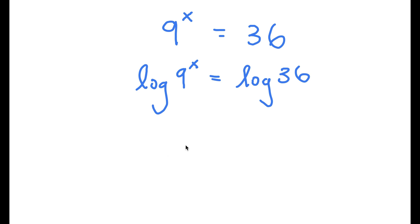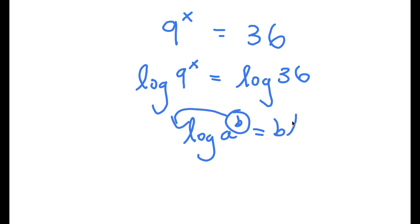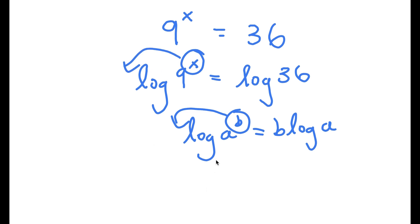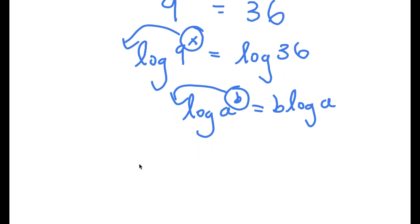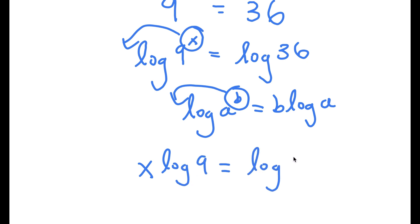If I have something in the form log a to the power of b, I can move this exponent b to the front, so it equals b times log a. In this case, I have log 9 to the power of x, and we can think of x as b. So we can move this to the front, and now this equals x times log 9 is equal to log 36.